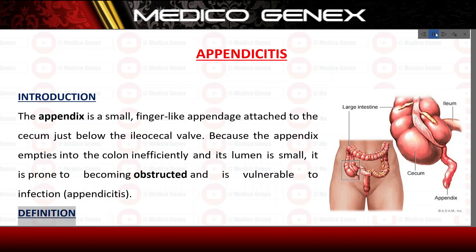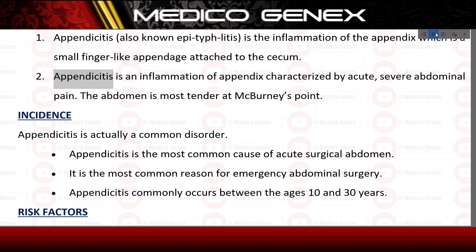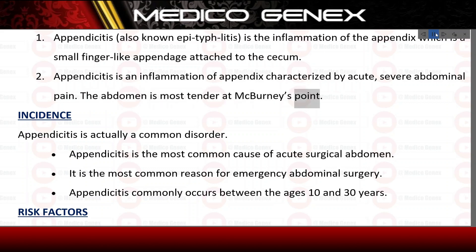Definition. Appendicitis is the inflammation of the appendix, which is a small finger-like appendage attached to the cecum. It is characterized by acute, severe abdominal pain. The abdomen is most tender at McBurney's point.